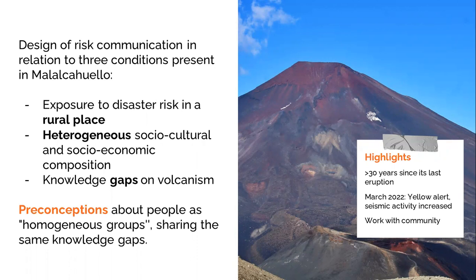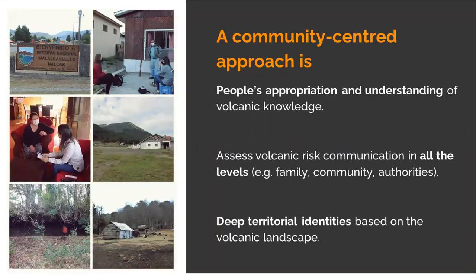By knowledge gaps, we mean the existence of local environmental knowledge in this community — they know something about the volcano. This approach consists of people's appropriation and understanding of volcanic knowledge. Second, it is fundamental to assess volcanic risk communication supporting decision-making at the local scale before, during, and after eruptions, at all levels including family, community, and authorities. Third, it is especially relevant at rural human settlements with deep territorial identities based on the volcanic landscape.